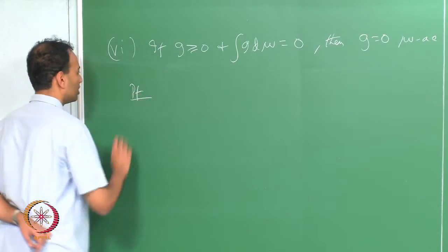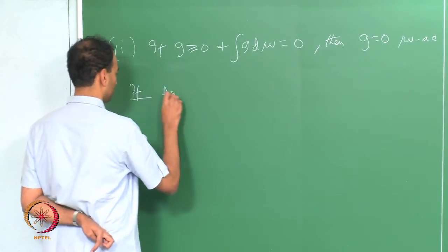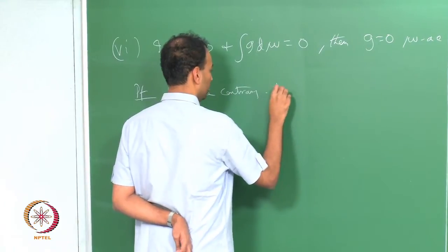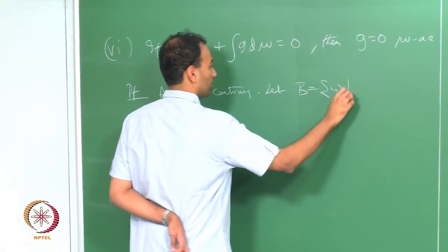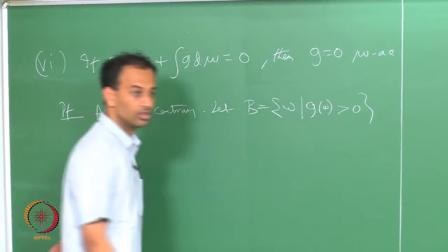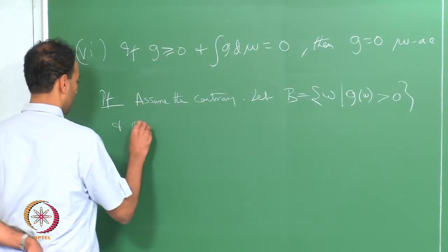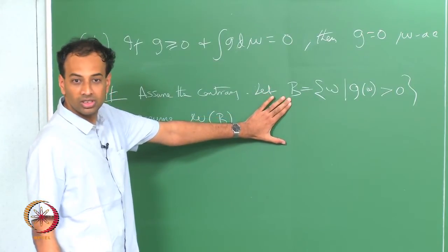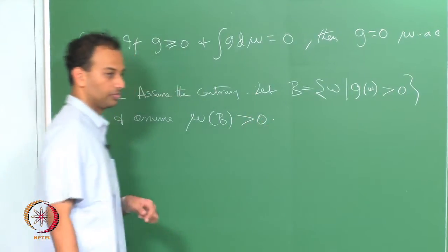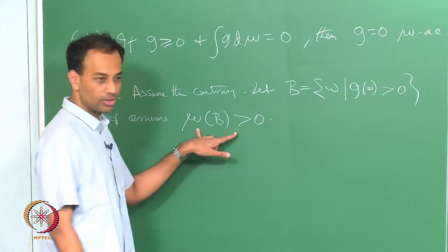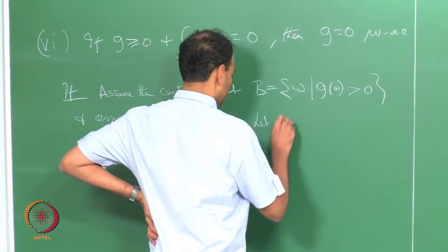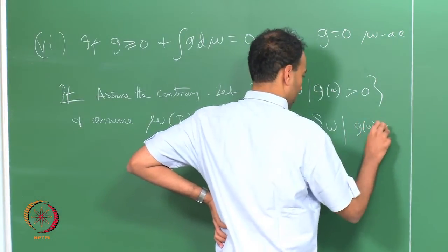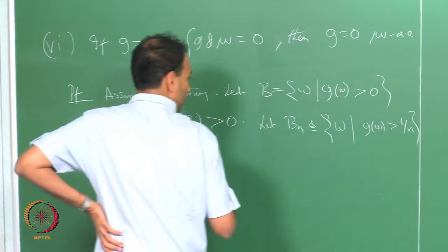The proof is as follows. Assume the contrary: let B be the set where g(omega) is strictly bigger than 0, and assume mu(B) is not 0 — that it is strictly positive. You want to show this leads to a contradiction. So we define B_n as the set of all omegas for which g(omega) is greater than 1/n.